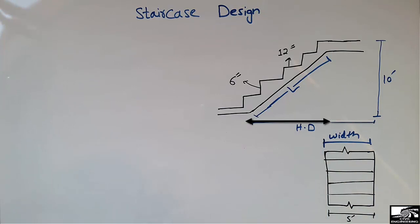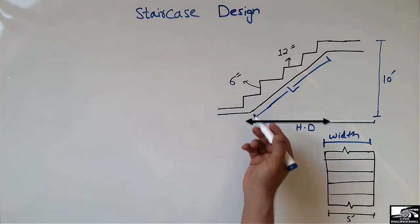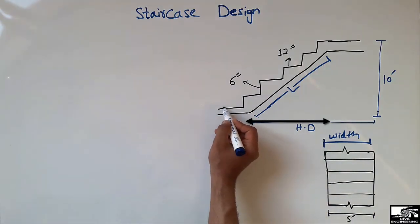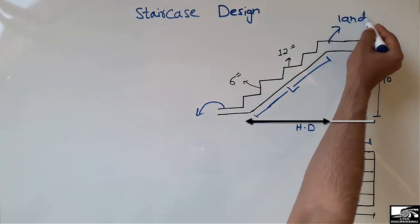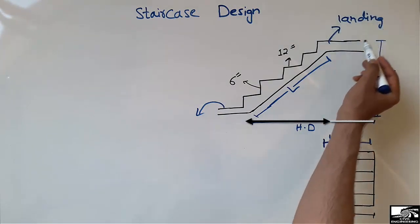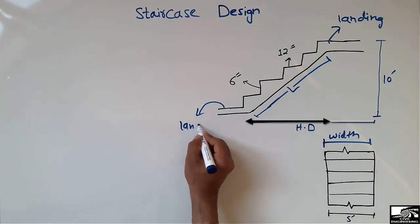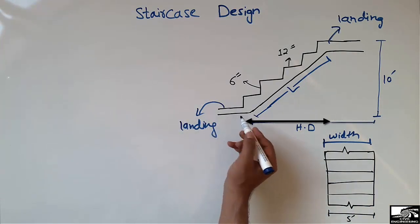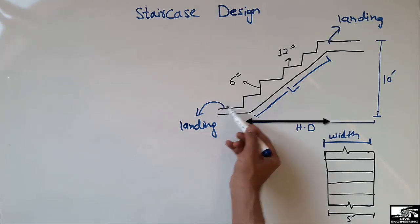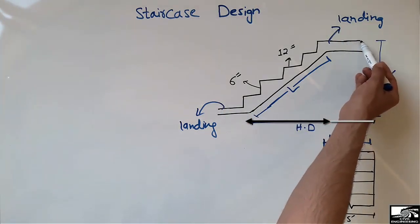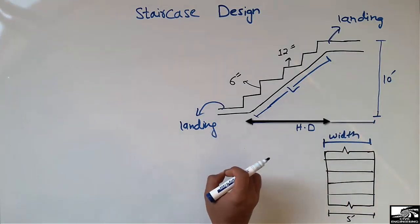This staircase is composed of certain terms which I will discuss one by one, and I will also show how to calculate the different terms. These are known as the landings in the staircase, which are connected to the slab — either to the top or the bottom of the slab of your building. These two are known as the landings, and each staircase has a landing.